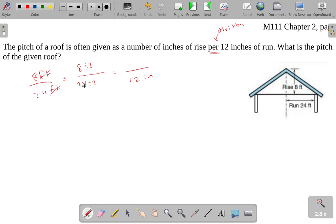So if I take and divide both the top and the bottom by 2, well, 24 divided by 2 is 12. 8 divided by 2 is 4.